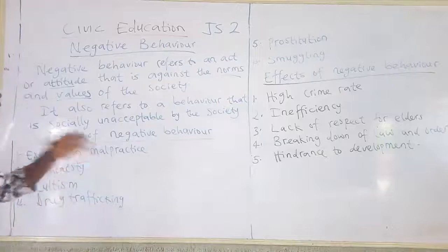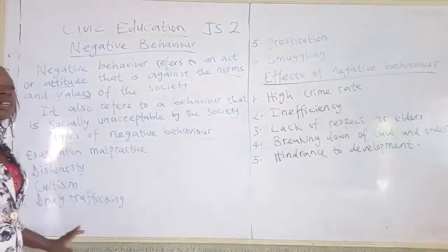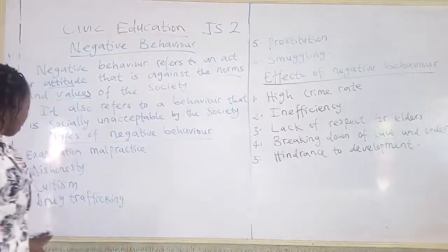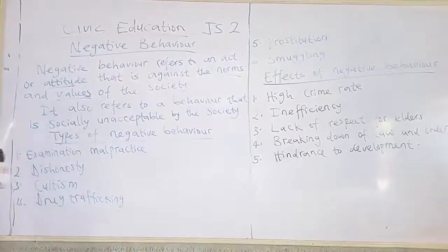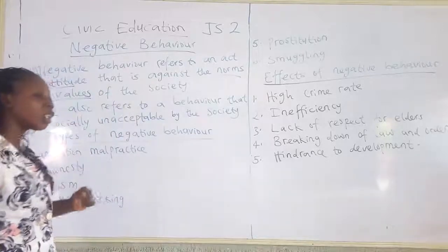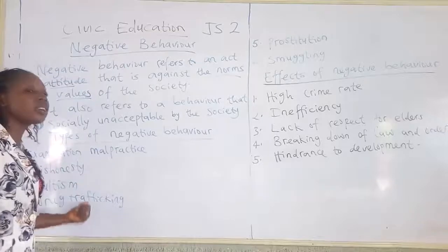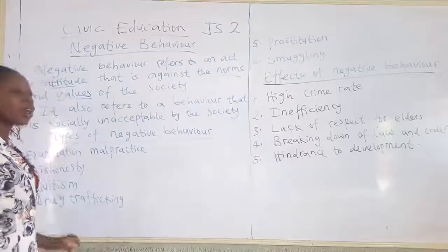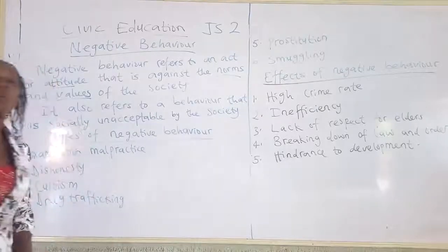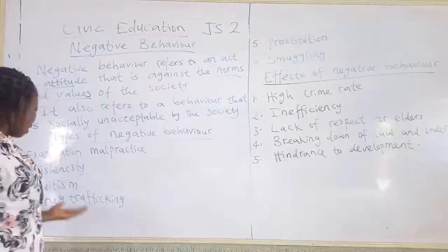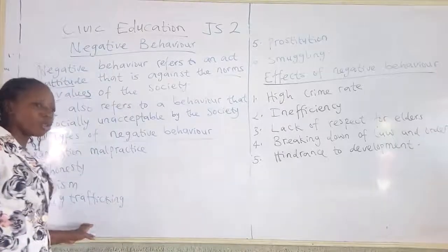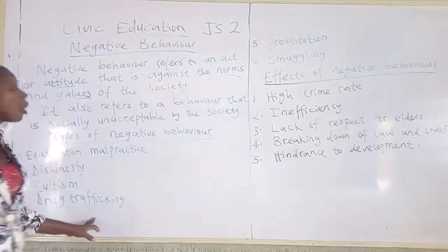Another type of negative behavior is cultism. This is common among students of higher institutions, where they join cults. If you are a student of a higher institution and you don't take your stand before gaining admission, you may be pulled into cultism. Then another one is drug trafficking — taking drugs from one place to another, for example carrying cocaine or marijuana from one country to another. That is drug trafficking.